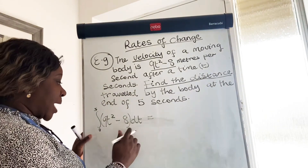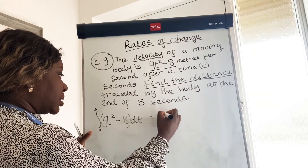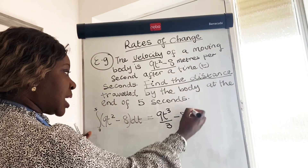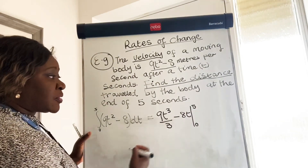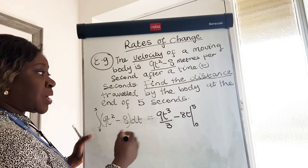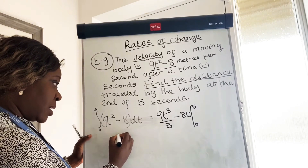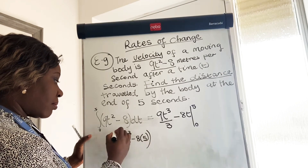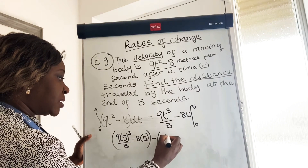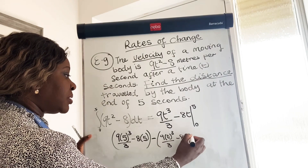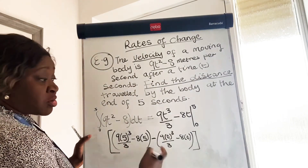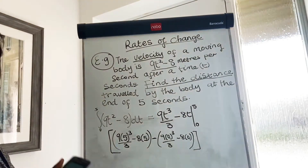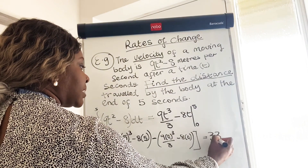So let's do that. If we integrate this, 9t squared gives us 9t to the power of three over three, minus 8 gives us 8t, going from zero to five. All we have to do now is substitute when t equals five and when t equals zero, and do the subtraction as usual. That would be: 9 times 5 cubed over 3 minus 8 times 5, minus 9 times 0 cubed over 3 minus 8 times 0. Putting that into your calculator will give you 335 meters.